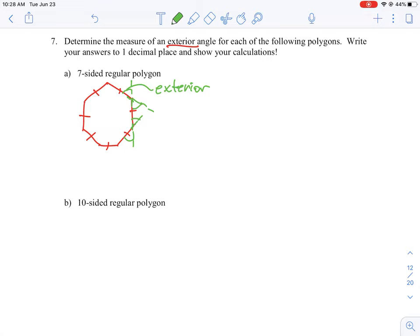So we do have a formula for exterior angle. Exterior angle is simply equal to 360 degrees divided by n, where n is equal to the number of sides.